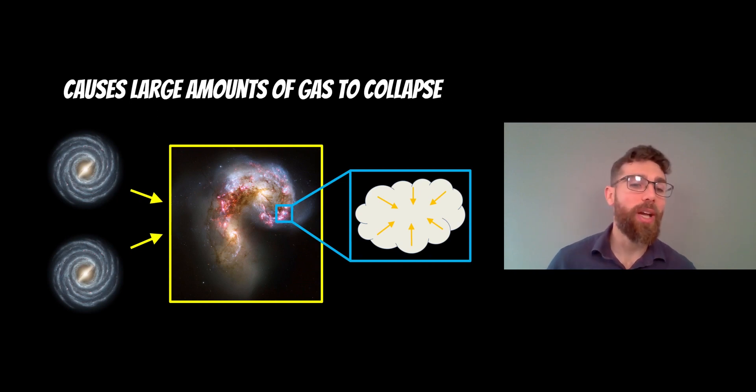But during a merge of two spiral galaxies, a lot of that gas collapses all at once. So then you have a sudden burst of star formation.